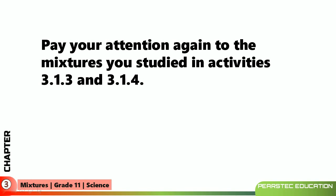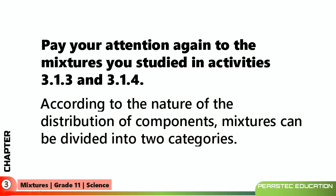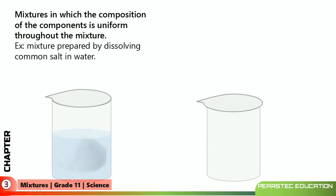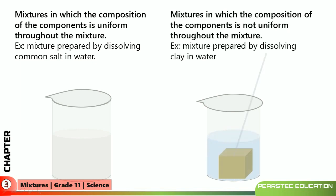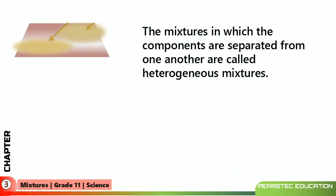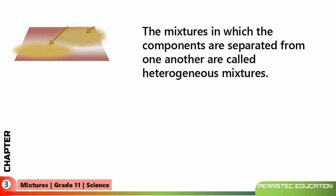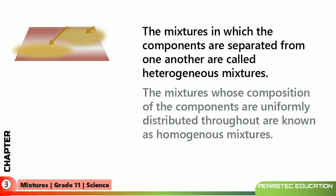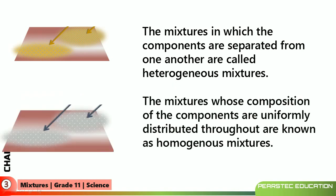Now, paying attention to the two mixtures studied in these activities: according to the nature of the distribution of components, mixtures can be divided into two categories. A mixture in which the composition of components is uniform throughout is the first type — for example, the mixture of common salt in water. A mixture in which the composition is not uniform throughout is the second type — for example, the mixture of clay in water. The mixture in which components are separated from one another is called a heterogeneous mixture, and the mixture whose components are uniformly distributed throughout is known as a homogeneous mixture.